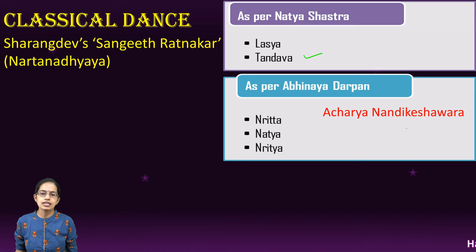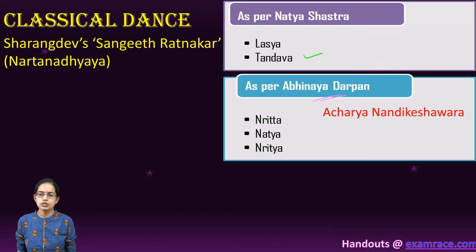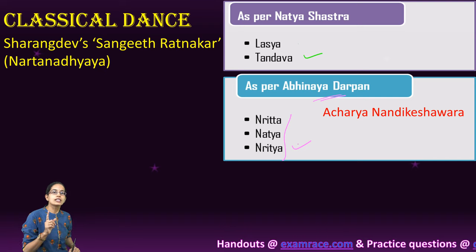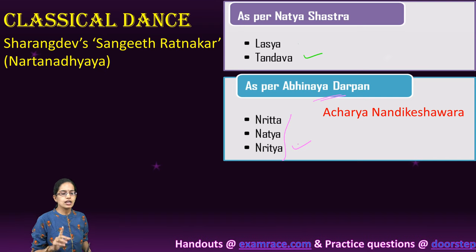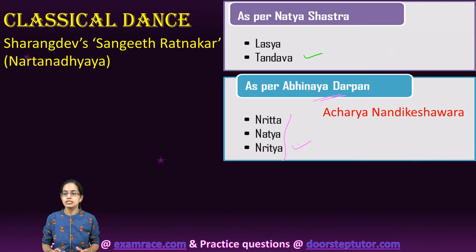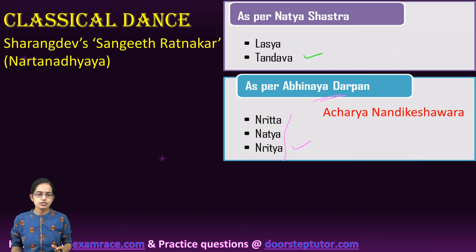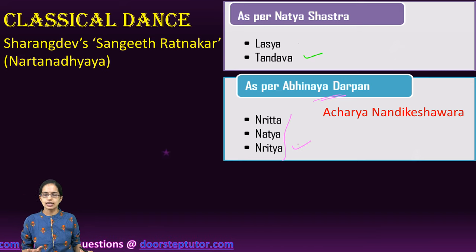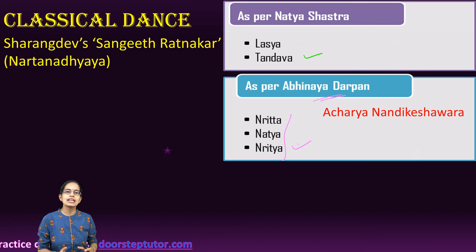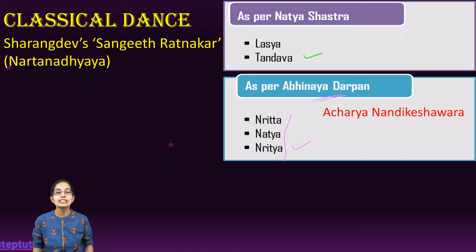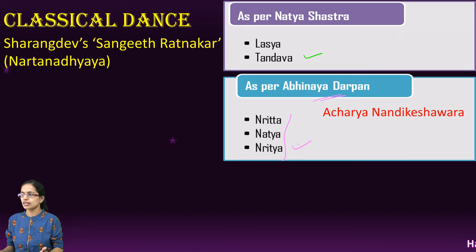Under the Acharya Nandikeshvara's Abhinaya Darpana, you have three different forms: Nrita, which talks about the basic steps of the dance; Nathya, which talks about the dramatic representations; and finally Nritya, which talks about the sentiments and emotions.